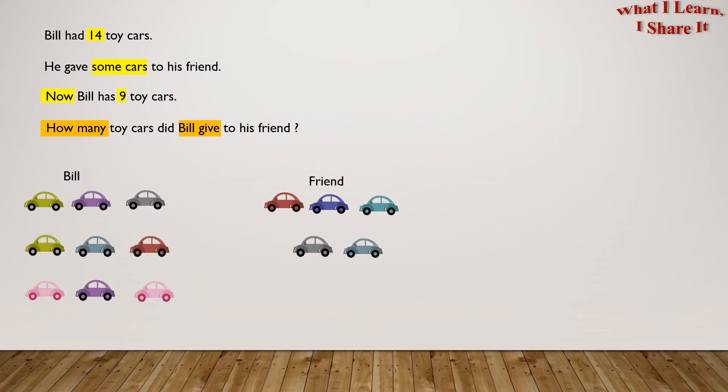So here it is. 9 for Bill and 5 for his friend. So Bill gave 5 toy cars to his friend. Yay! We solved the problem. Coming up is the number line strategy.